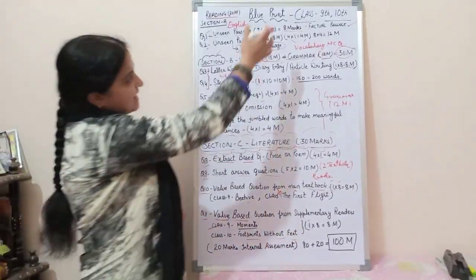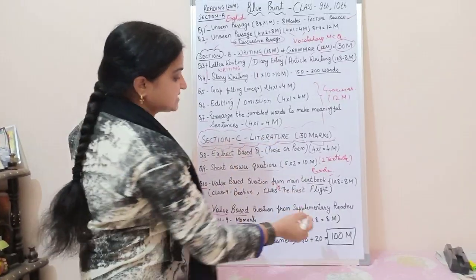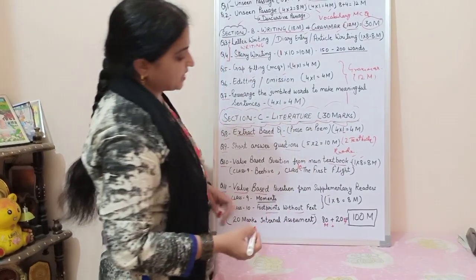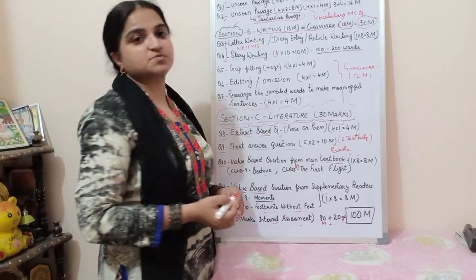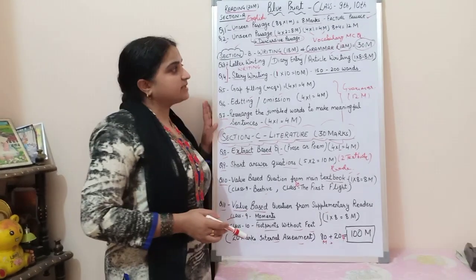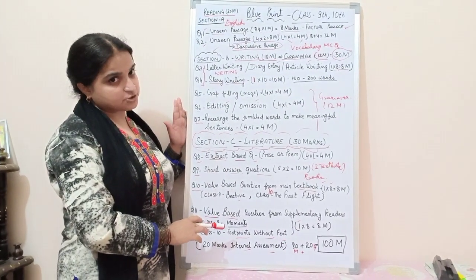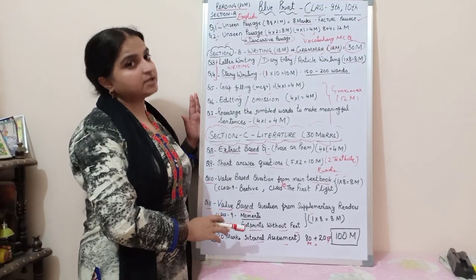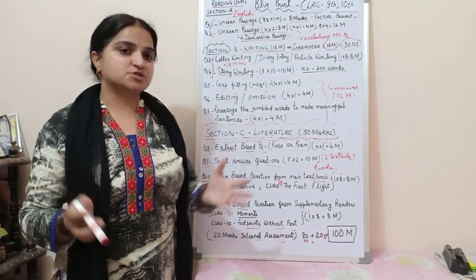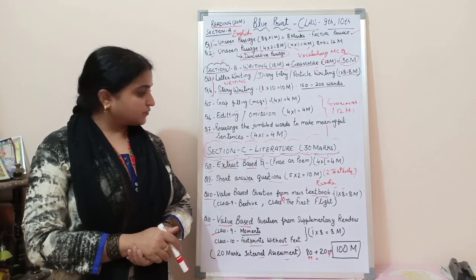When you add all the marks — 20 plus 30 plus 30 — the total is 80 marks. An additional 20 marks are for internal assessment given by your teachers, making the grand total 100 marks. I have very minutely discussed each and everything of the blueprint, and it is going to be very helpful for you to prepare for your exams. You can note it down in your copies or make a flow chart — that depends on your creativity. Thank you, students.